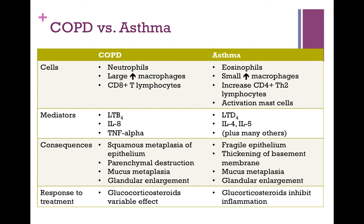Inflammatory mediators also differ: in COPD we see LTB4, IL-8, and TNF-alpha; in asthma we see LTD4, IL-4, IL-5, and many other mediators. These differences lead to different consequences — in COPD we see squamous metaplasia of the epithelium and parenchymal destruction, whereas in asthma we see a fragile epithelium and thickening of the basement membrane. Both diseases share mucous metaplasia and glandular enlargement.